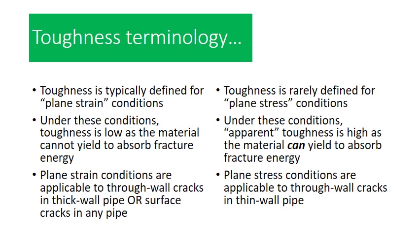Toughness is typically defined for plane strain conditions, under which the toughness is really low. The material is not in a position where it can yield and absorb extra fracture energy. Plane strain conditions are applicable to through-wall cracks in thick-wall pipe or for surface cracks in any pipe. Toughness is rarely defined under plane stress conditions. Under plane stress, you get a higher apparent toughness because the material can yield and absorb a lot of fracture energy. Plane stress conditions are only applicable to through-wall cracks in thin-wall pipe.